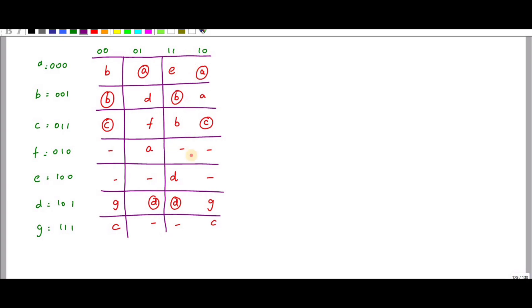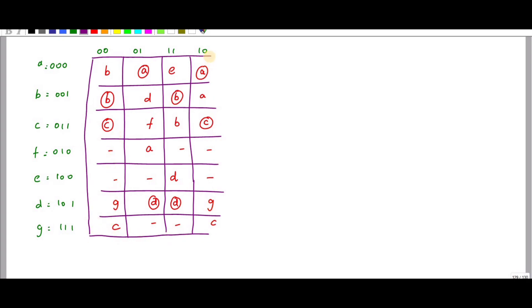So you can see that instead of four rows, we are getting three extra rows — a total of seven rows. I hope this video is useful for you.